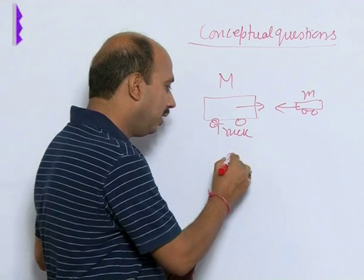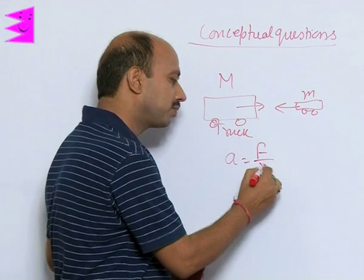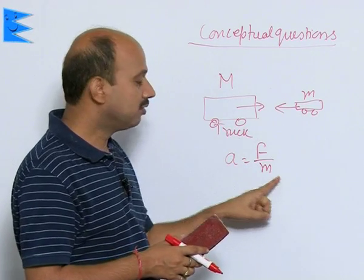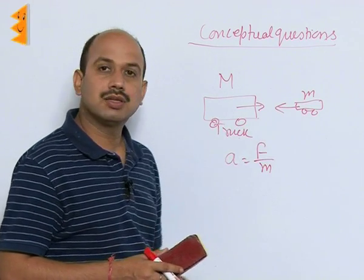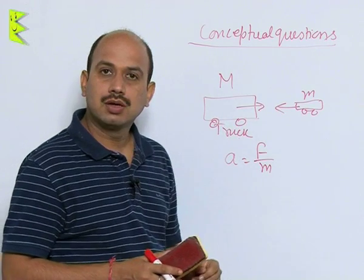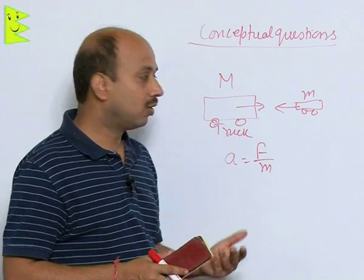So you know that a is equal to F upon m. Since force involved in both the cases are equal, masses are different. So obviously there will be more acceleration in the car as compared to truck.